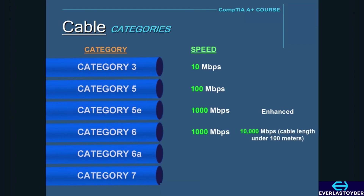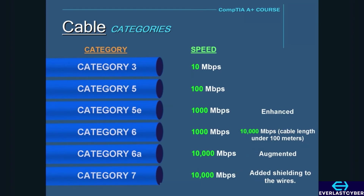Category 6 supports 10,000 megabits per second only for cable lengths of less than 100 meters. Category 6a, or augmented, has a maximum speed of 10,000 megabits per second and, unlike Category 6, supports a maximum length of 100 meters. Lastly, there is Category 7, which also has a speed of 10,000 megabits per second. Category 7 is essentially a heavy-duty version of Cat 6, with added shielding to the wires for better protection against interference.